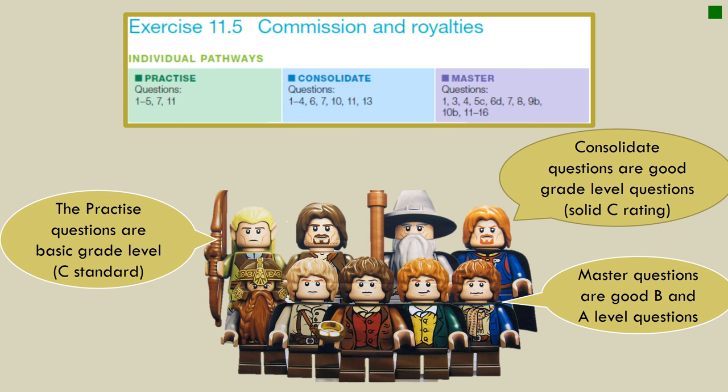Thanks for coming today. Have a crack at those other exercises. Remember what these guys are telling you on the screen here. Practice questions. C standard. Consolidate is good C. I want to move forward and get onto the mastery stuff if you want to head towards a B or an A. And notice how the questions change. It only goes up to question 11. We add in more. We add in everything from 11 to 16. That's how it gets harder. And that's how you know where you're aiming for. Thanks for coming.